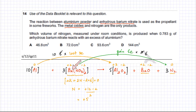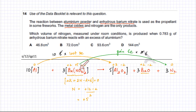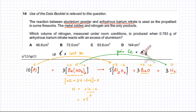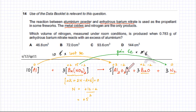There are 3 bariums on the left, so there should be 3 bariums on the right — 3 BaO. Now checking: 10 aluminiums each lost 3 electrons = 30 electrons lost. 6 nitrogens going from +5 to 0 means each gains 5 electrons = 30 electrons gained. Electrons lost equals electrons gained — the equation is balanced. Confirming with oxygen: 3 Ba(NO₃)₂ has 18 oxygens; 5 Al₂O₃ gives 15 oxygens plus 3 BaO gives 3 oxygens = 18. Everything is perfectly balanced.